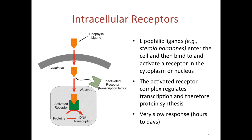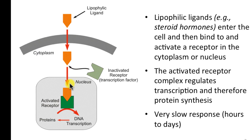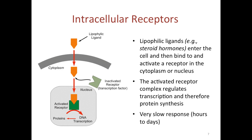Finally, the last type of receptor is what we call intracellular receptors. In this case, the ligand needs to be lipophilic, meaning it is soluble in fat, so it can diffuse through the lipid bilayer membrane into the cytoplasm of the cell. The ligand then binds to an inactivated receptor inside the cell, which may be a transcription factor. Together, they enter the nucleus of the cell, and this activated receptor complex leads to transcription of DNA and ultimately protein synthesis. This is a very slow response, requiring hours or days to complete.